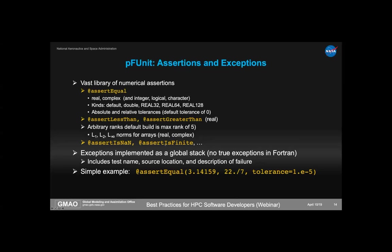One limitation: there are no true exceptions in Fortran. Instead, there's a global stack that grows when tests throw exceptions, and the framework inspects the stack after the test. This means there isn't as much automatic propagation to higher code levels, so users need some awareness if doing something particularly advanced. For a simple single-layer test, this doesn't really matter.